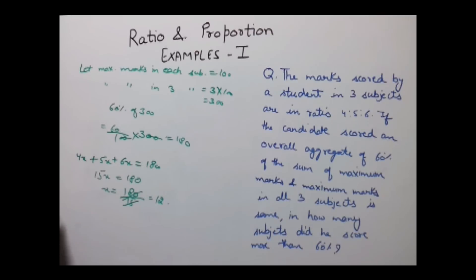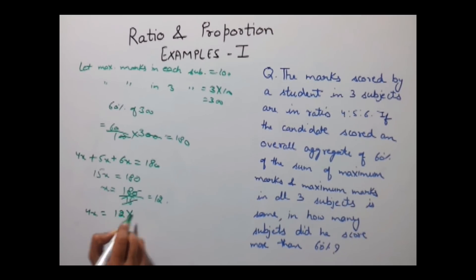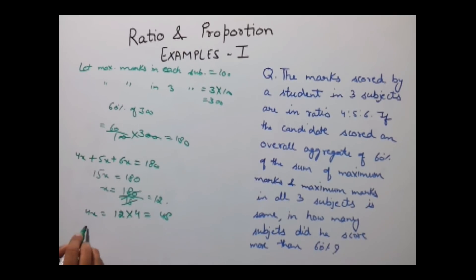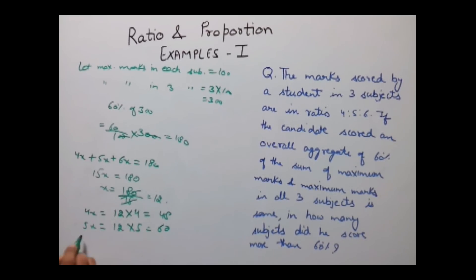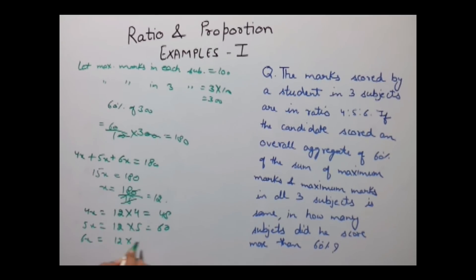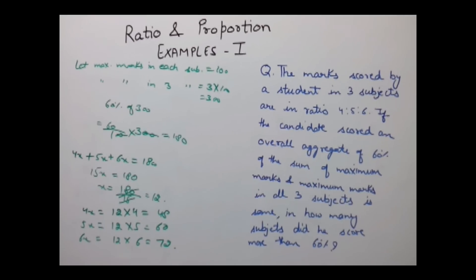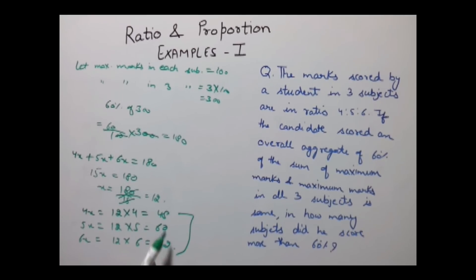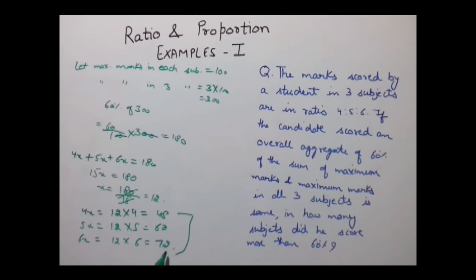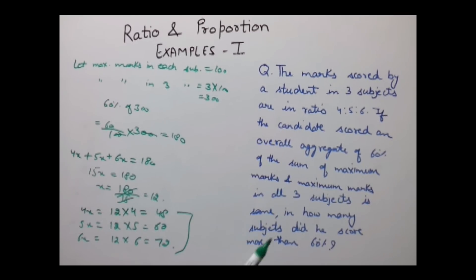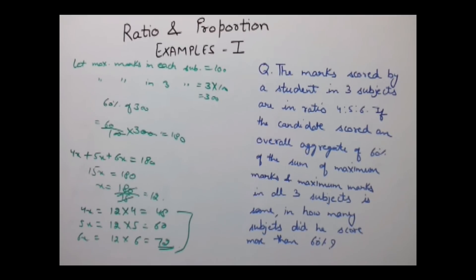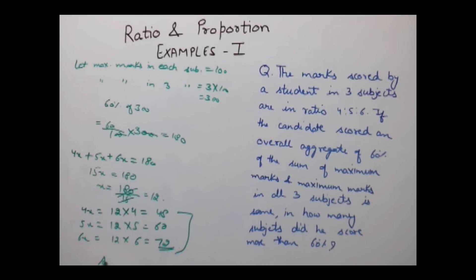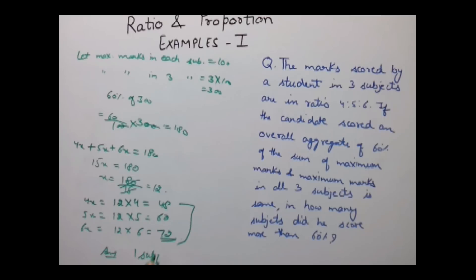So the value of x is 12. He actually scored 4x = 4 × 12 = 48, 5x = 5 × 12 = 60, and 6x = 6 × 12 = 72. So he scored 48 in one subject, 60 in another, and 72 in the third. The question asks how many subjects he scored more than 60% — the answer is 1 subject.